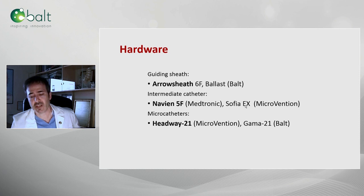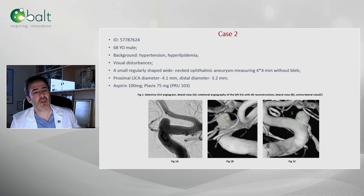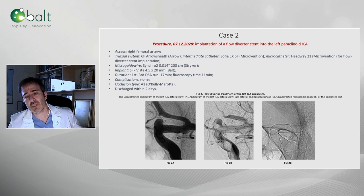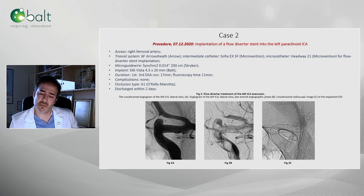Second case: a small carotid ophthalmic aneurysm. The proximal carotid measures 0.4 mm in diameter, PRU 103. This is the immediate image obtained after the implant of this device. You can see again the radiopacity is remarkable, especially as I'm a chronic user of the pipeline — I couldn't get images as nice as with this flow diverter. You barely can see it.